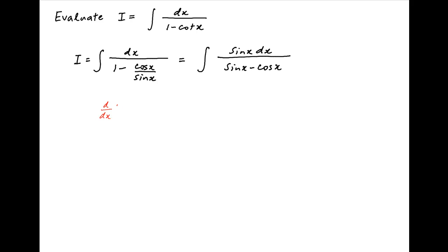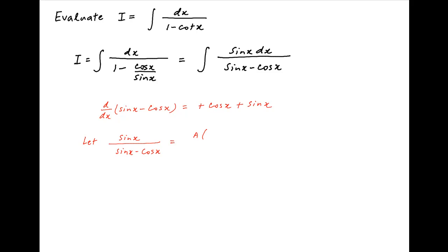Note that the derivative of the denominator of the integrand, sinx minus cosx, is equal to cosx plus sinx. We will try to express the numerator sinx as a combination of the derivative of the denominator and the denominator itself, and we will see in a few steps why this is useful.